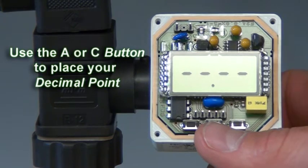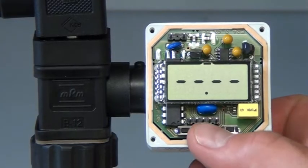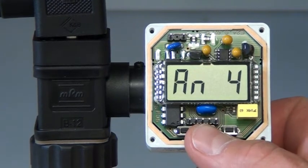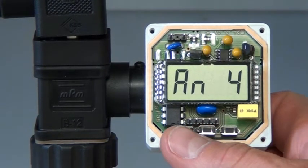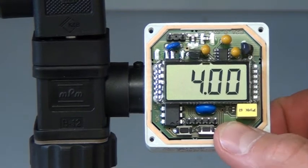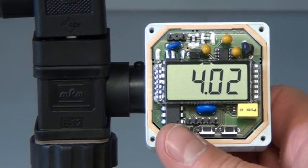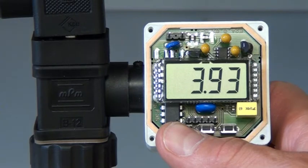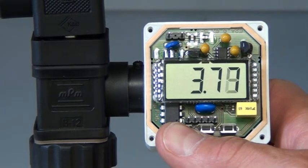Once the decimal point has been set, you will need to set the lower end of the range. To set the lower end of the range, depress the B button again until AN4 is displayed. Use the up C button and or the down A button to program the lower end of the range. For this demo, I will press the A button until the display reads 0.00.